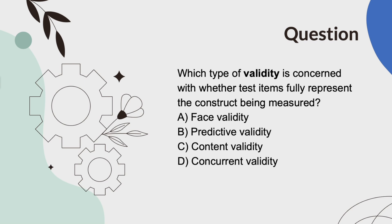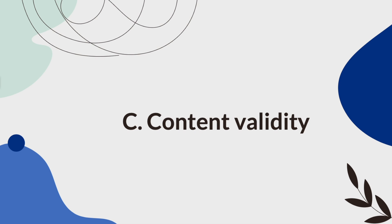Which type of validity is concerned with whether test items fully represent the construct being measured? A, face validity. B, predictive validity. C, content validity. Or D, concurrent validity. And the answer is C, content validity.